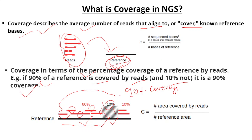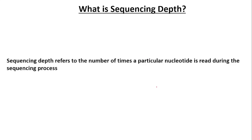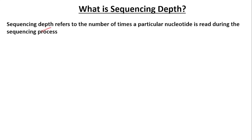So basically, coverage is the area covered by reads relative to the reference area — how much of the reference area is covered by the reads. Now, what is sequencing depth? Sequencing depth refers to the number of times a particular nucleotide is read during the sequencing process.